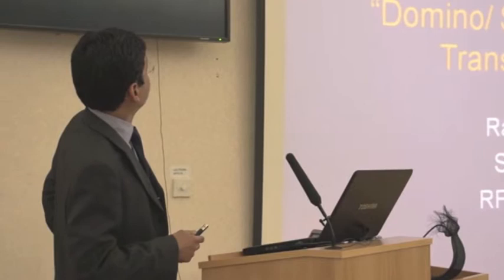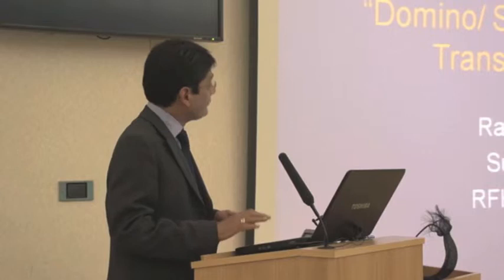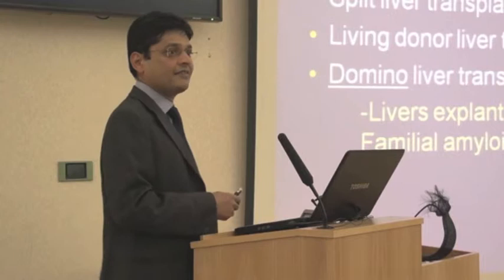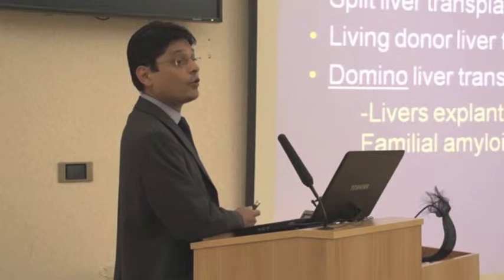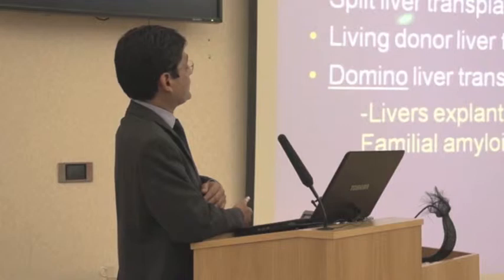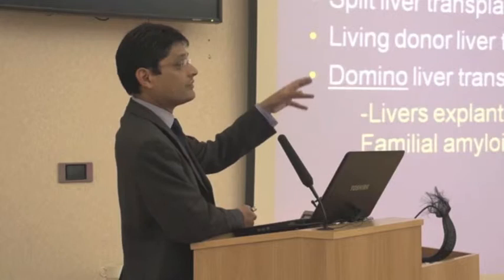I am going to give a brief talk on the use of amyloid donor grafts in liver transplantation, a process which is called domino or sequential liver transplantation. The general shortage of cadaveric organs for transplantation has led to some very innovative techniques, including split liver transplantation, living donor transplantation, and domino liver transplantation, which involves using livers explanted from patients with amyloid disease or FAP.